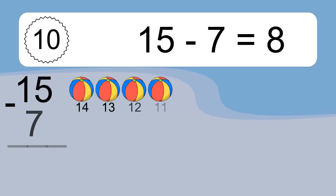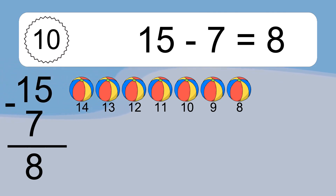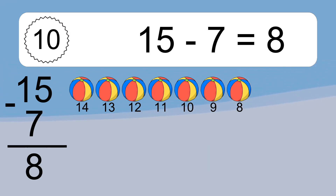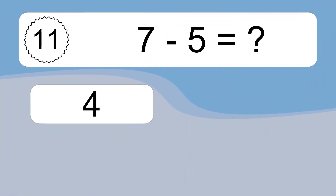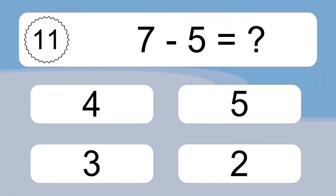15 minus 7 equals what? 15 minus 7 equals 8. Let's count it: 14, 13, 12, 11, 10, 9, 8.